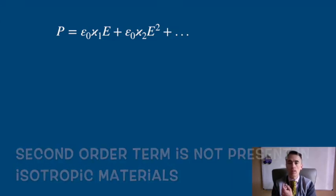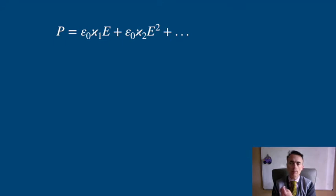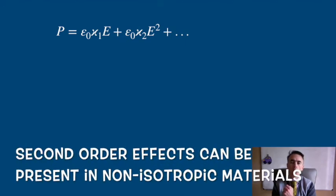Isotropic would mean the direction is not relevant and an E-field should produce the same effect as a minus E-field. But if the medium is not isotropic and the E-field is strong enough, we can have second-order effects.